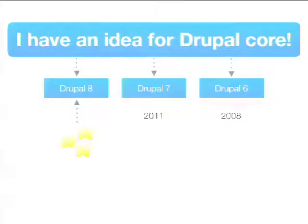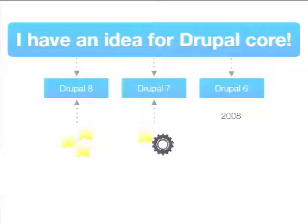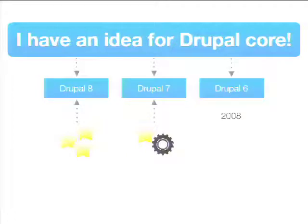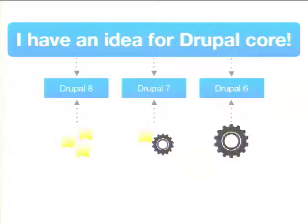Most of the shininess goes to Drupal 8 because that's the new upcoming version that can change anything. Some shininess can go to Drupal 7. Dries said in his core conversation today that we loosened the policy of backporting stuff to Drupal 7 — which is kind of true. We did backport some stuff, but it's not a huge change. The main goal for Drupal 7 is to maintain it as a stable version, and it's absolutely the goal for Drupal 6 to keep it as stable as possible.